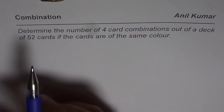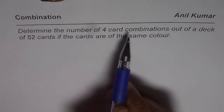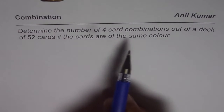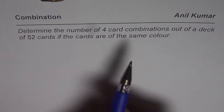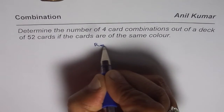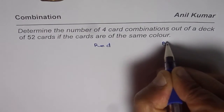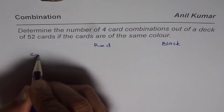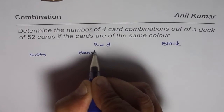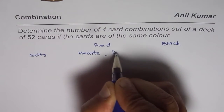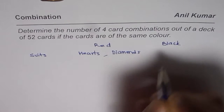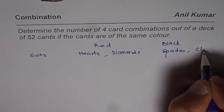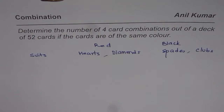Let's look into this question once again. It says: determine the number of four card combinations out of a deck of 52 cards if the cards are of the same color. Now when we say same color, the cards could be red or black — these are the two colors. If it is red, then we have suits which could be hearts or diamonds. If it is black, it could be spades or clubs.